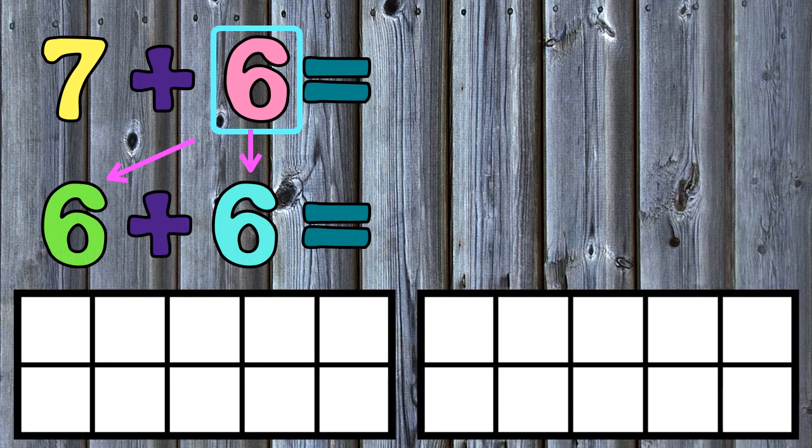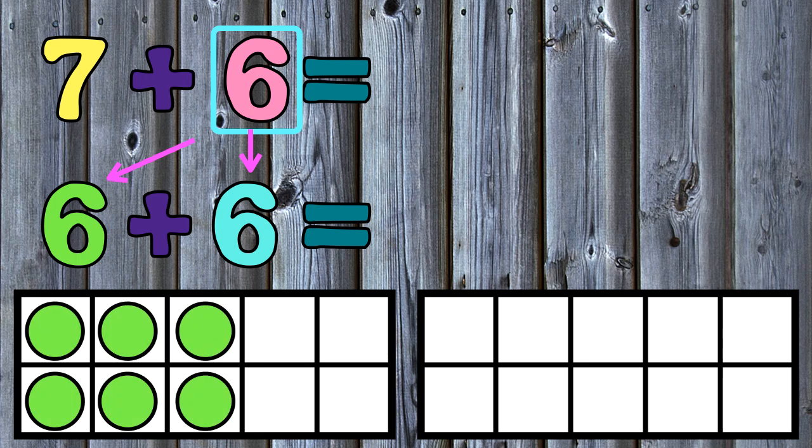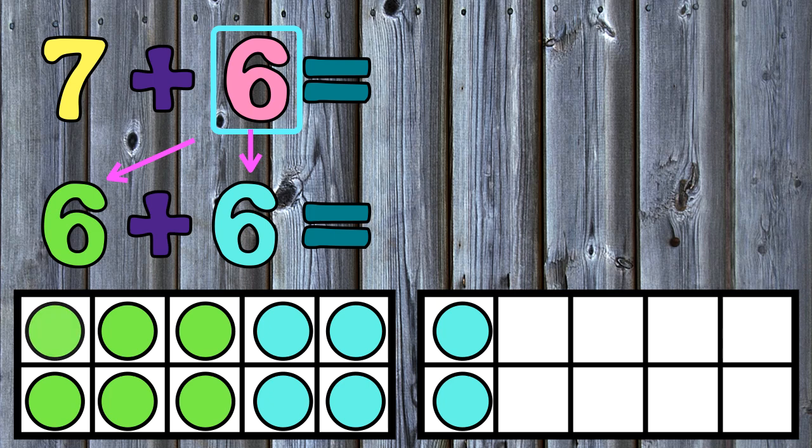I will then use a 10 frame to add 6 plus 6. I will place 6 dots in the 10 frame for the first addend, and another 6 dots for the second addend, and then I will add them. 1, 2, 3, 4, 5, 6, 7, 8, 9, 10, 11, 12.